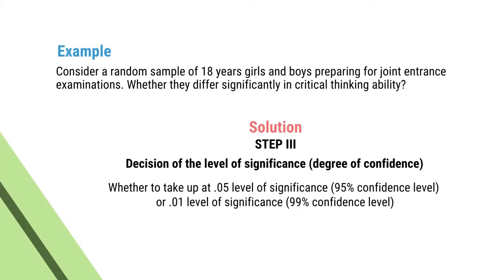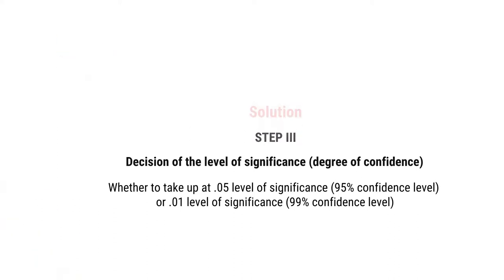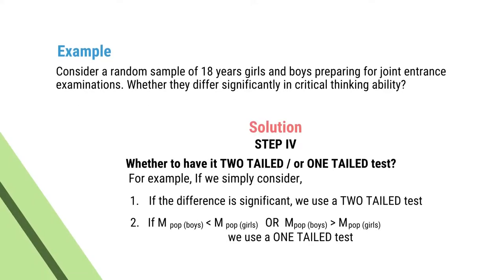Step 3: Take a decision on the level of significance — that is, the degree of confidence — at which we are going to test whether the two means are significantly different. We decide whether to use the 95% or 99% confidence level. Step 4: Decide whether it is a two-tail test or a one-tail test. If we simply consider whether the difference is significant, we use a two-tail test. But if we ask whether the mean of boys is smaller or greater than that of girls, we use a one-tail test.